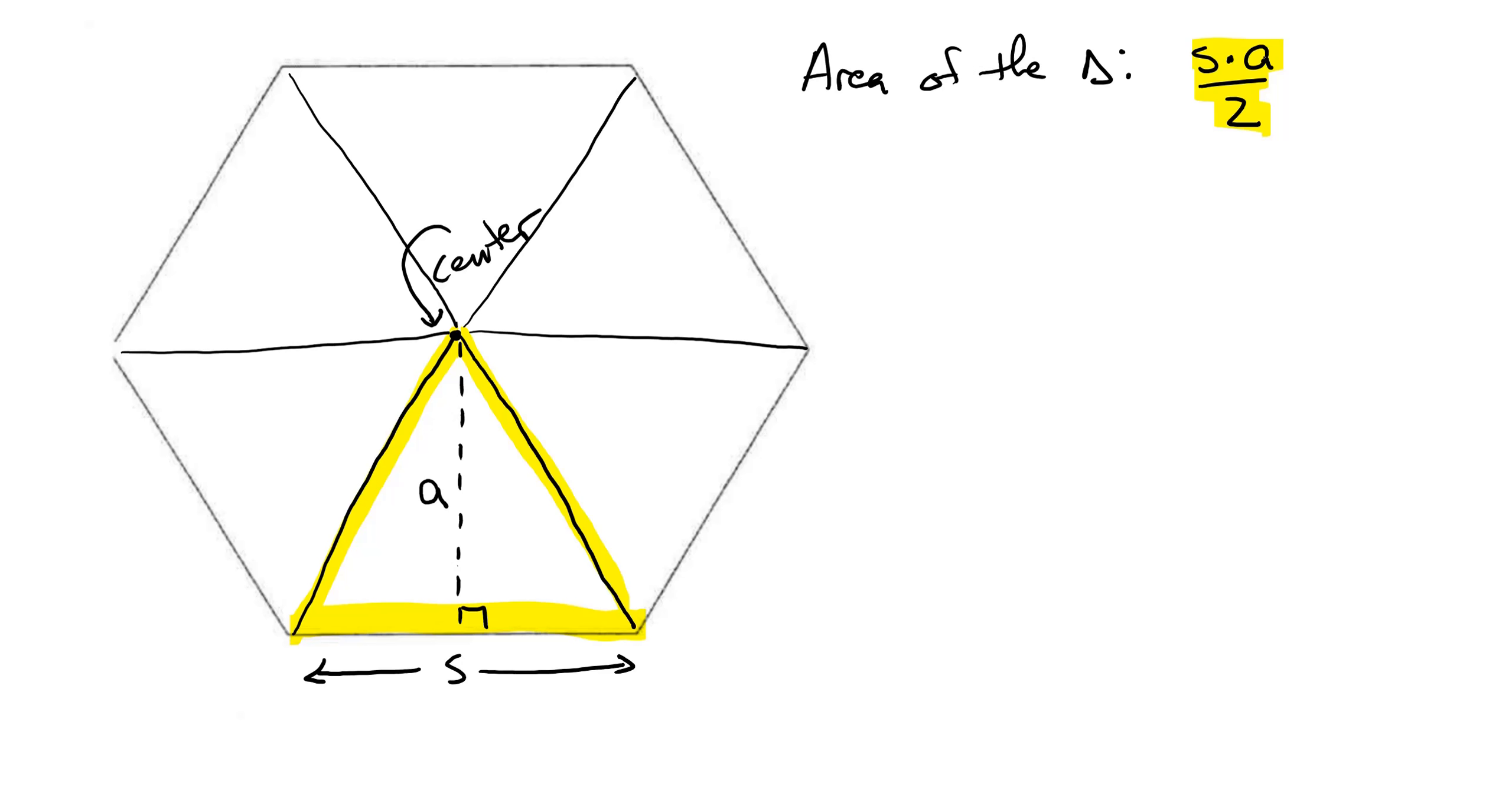But let's say our polygon has N sides. If it had N sides, we would have N triangles.